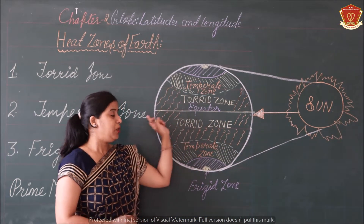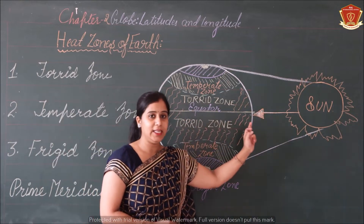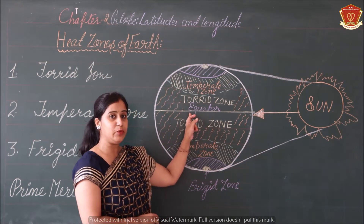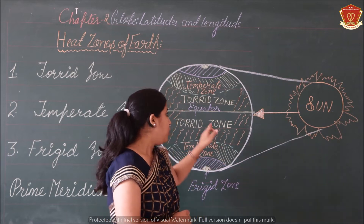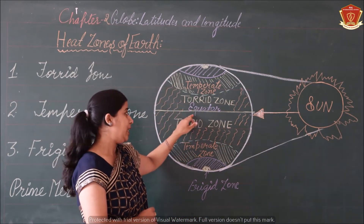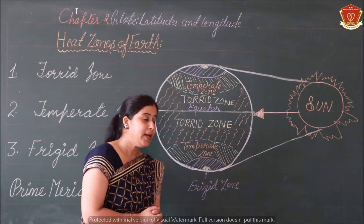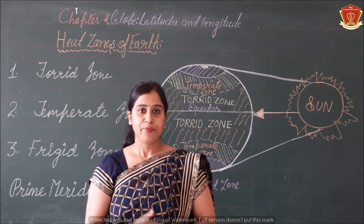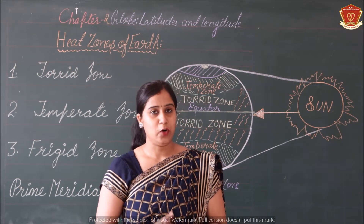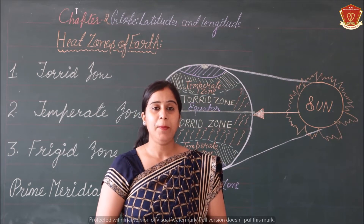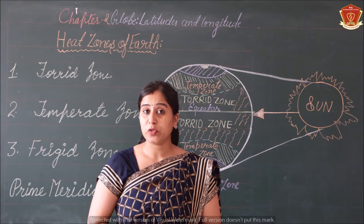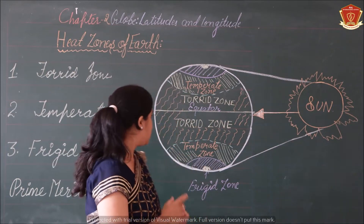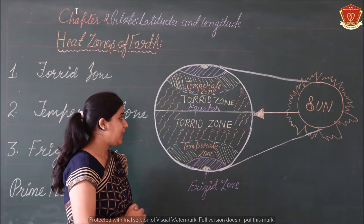Torrid zone — the equator, which is the imaginary line dividing the earth into two halves, north pole and south pole. We have taken the reference of equator at zero degree. The zone that is situated to the north of the equator as well as to the south of the equator is known as Torrid zone. Jo zone equator ke north aur south mein aata hai, usko aap Torrid zone bolte ho. Countries that come in the Torrid zone include India, Africa, and America.